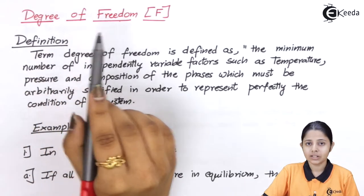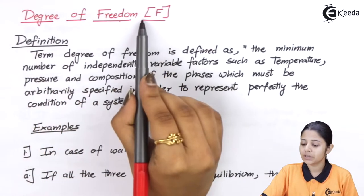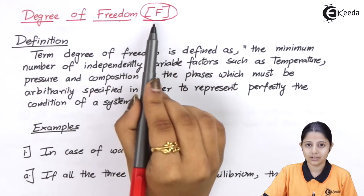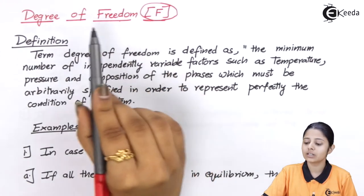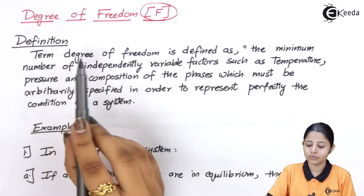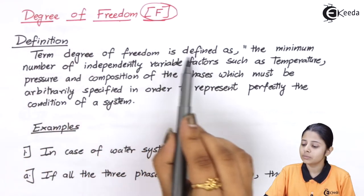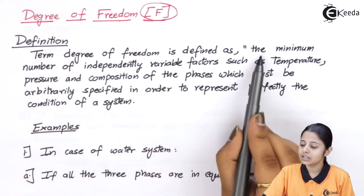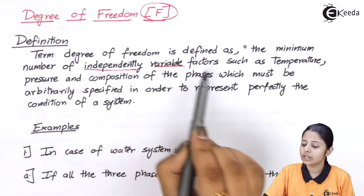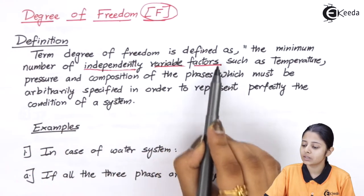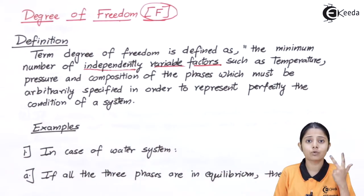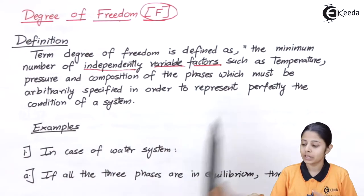Degree of freedom is represented by F, and this F is represented in square brackets. The term degree of freedom is defined as the minimum number of independently variable factors. These factors can be anything but they have to be independent and they have to be variable.